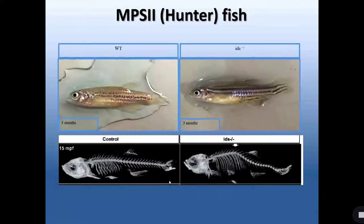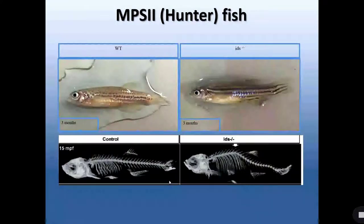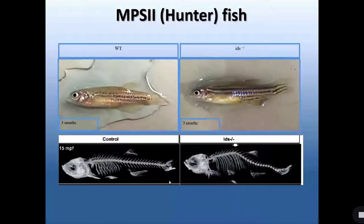A few years ago, we were the first ones who generated the MPS II zebrafish model. This fish exhibits many classical features of MPS II such as big liver, big spleen, heart defects, and skeletal alterations, as you see from this image.